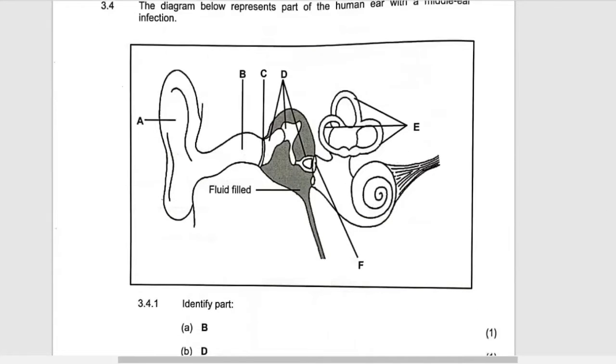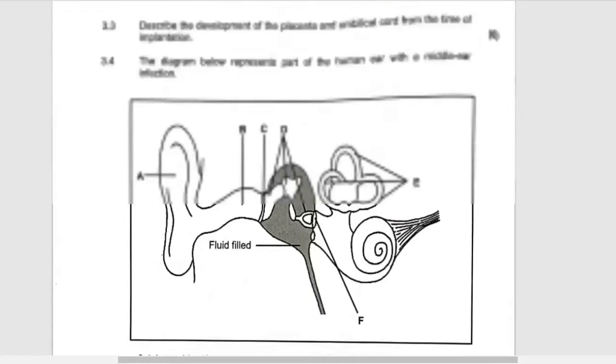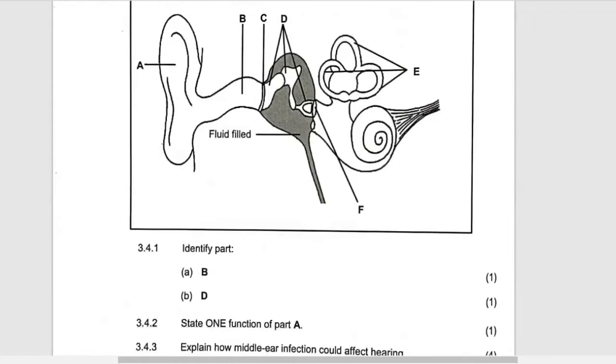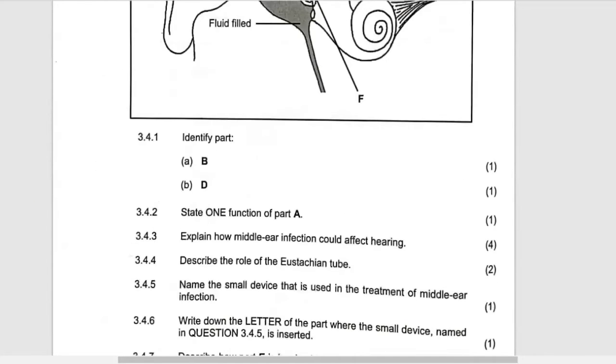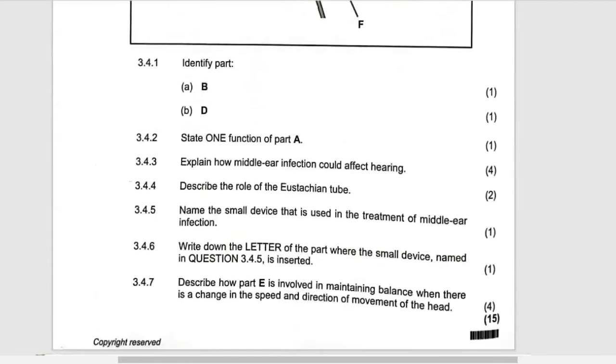So that's why it is a middle ear infection. Identify part B. We've seen it, which is auditory canal, and then part D, part D which is ossicles which are the three bones in the ear.